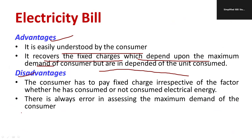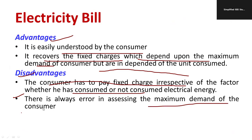The major drawbacks are: the customer has to pay the fixed charge regardless of the load power factor and consumption of load. They are least bothered whether you consumed electricity or not — you have to pay the fixed charge. That is the major shortfall. Also, there is always error in assessing the maximum demand of the consumer. Though we have a maximum demand meter, the result is not very accurate.